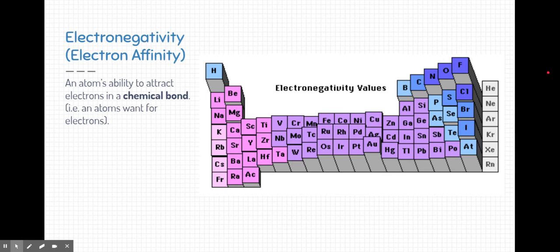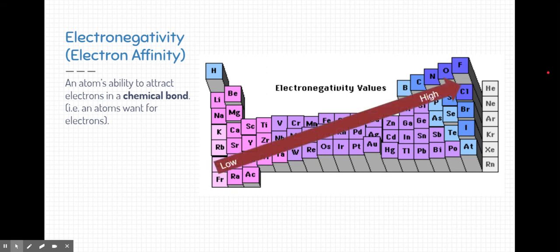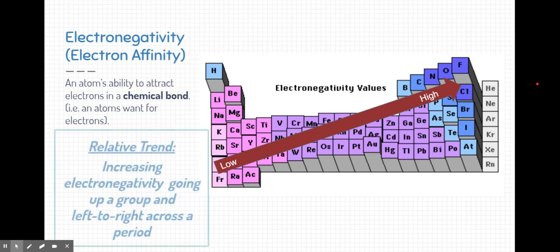Now, if you take a look at this periodic table organized by electronegativity, you can kind of see the trend. In fact, the trend is relatively the same as ionization energy. The higher the electron affinity elements are in the upper right-hand corner, and the lower ones are in the lower left-hand corner. So that's the trend, increasing electronegativity going up groups and from left to right across a period.